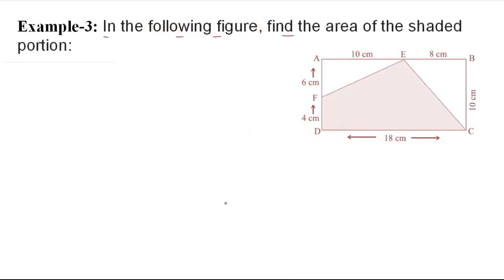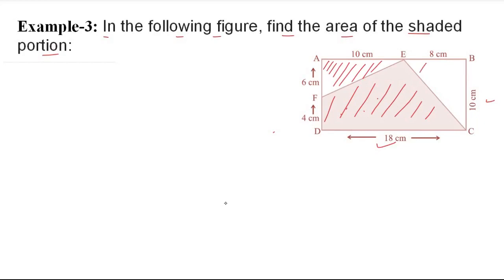The last example: Find the area of the shaded portion in the given figure. The overall figure is a rectangle of length 18 cm and breadth 10 cm. The shaded region is not a simple rectangle or triangle — it is a parallelogram-like shape. We subtract the areas of the two triangles inside from the total rectangle area.